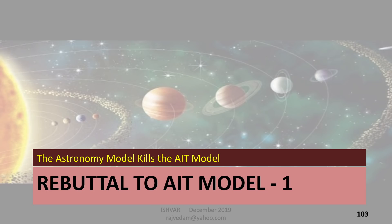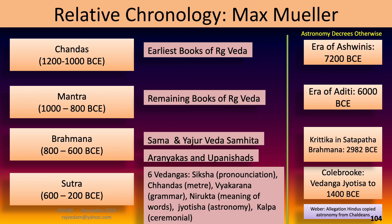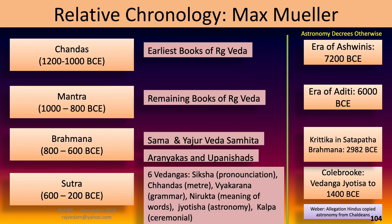Having talked about the astronomy model, I would like to use it to challenge the Aryan Invasion Theory. Max Müller proposed four periods in the Indian tradition: the Chandas period, the Mantra period, the Brahmana period, and the Sutra period. He said the earliest books of the Rig Veda belonged to the Chandas period at 1200 BCE, the remaining books of the Rig Veda to the Mantra period at 1000–1800 BCE, and that the Samaveda, Yajurveda, Aranyakas, Upanishads, Vedangas and Chandas were composed in the Brahmana and Sutra periods.